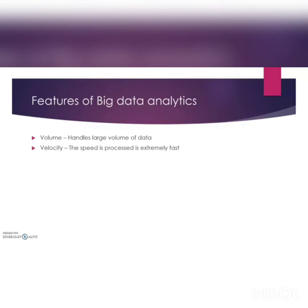The second feature is Velocity. For example, if you are searching for sunglasses and have a good network, you get the result within a fraction of a second — not two or three hours. Within a fraction of a second you get a large amount of results. This is velocity: the speed of processing is extremely fast.